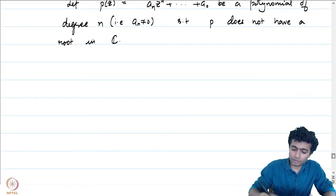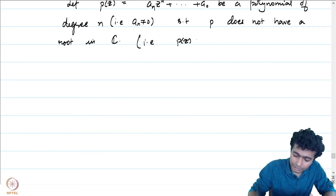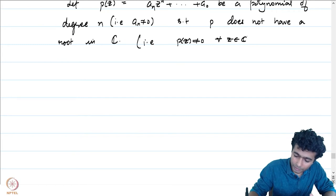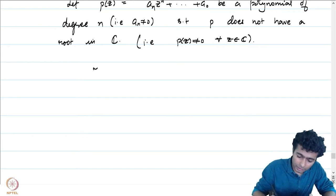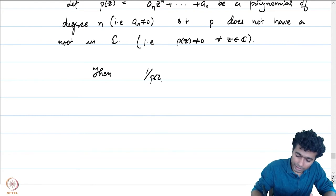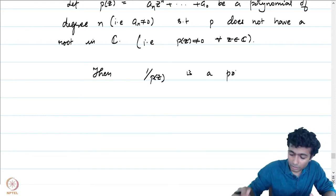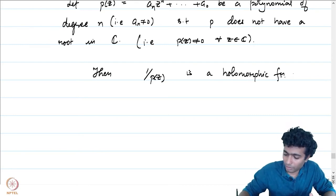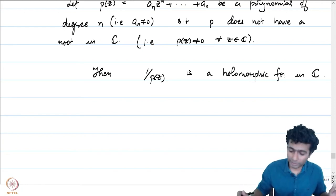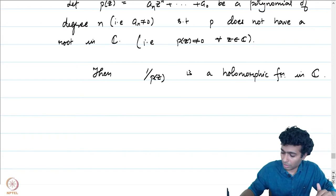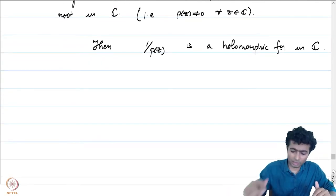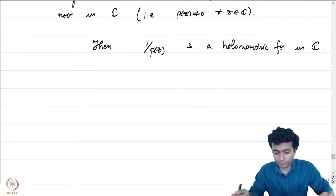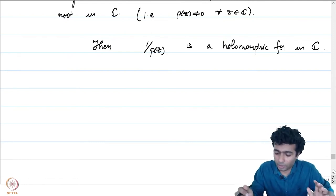If P(z) ≠ 0 for all z ∈ ℂ, then 1/P(z) is a holomorphic function — in fact an entire function — holomorphic on the entire complex plane, because P has no roots and by the quotient rule 1/P(z) is a well-defined entire function.